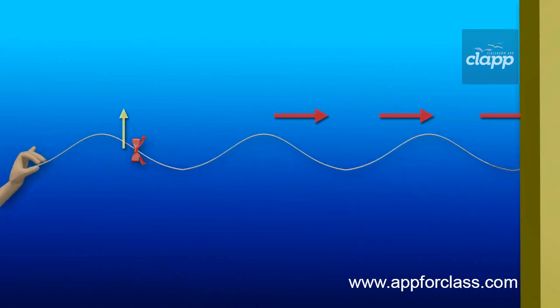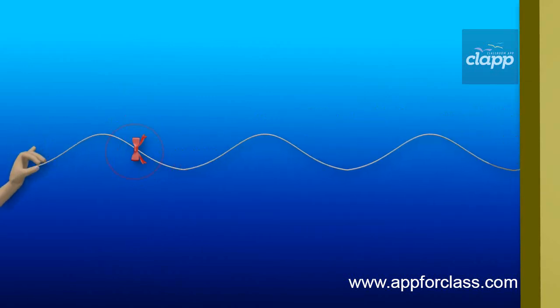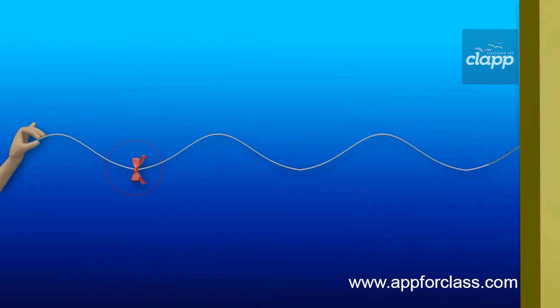When waves are formed on the rope, all that happens is just the ribbon moving up and down, whereas the ribbon's position on the rope does not change at all.